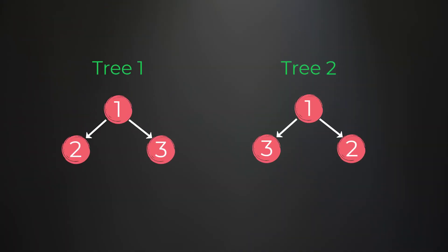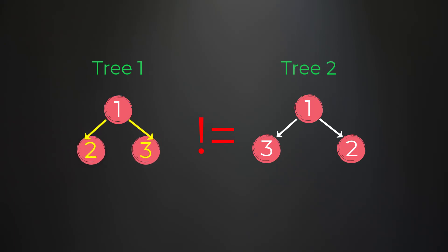We are given two binary trees and each node in the tree can have at most two children, and the node values are always going to be unique. For this problem we need to determine if the trees can be identical by flipping certain subtrees. Looking at these trees initially you can see that they're not equivalent, but if we swap the subtrees under node 1 for tree number 1 — meaning node 3 becomes the left child and node 2 becomes the right child — after that swap the trees are equivalent and we would return true from our function.